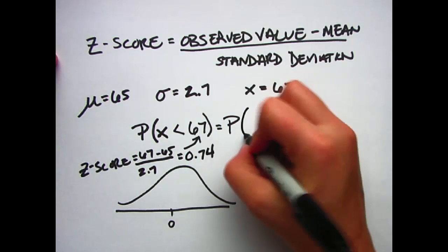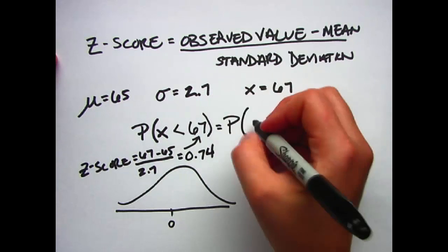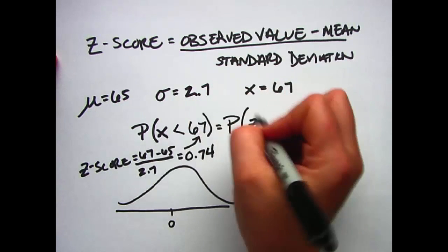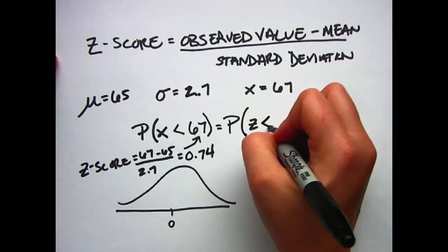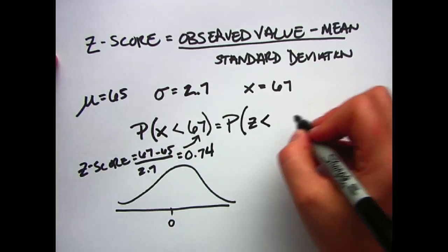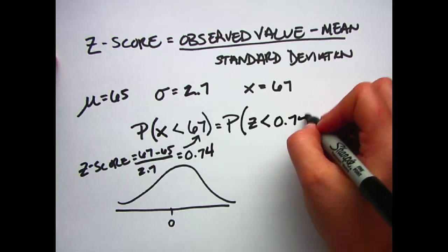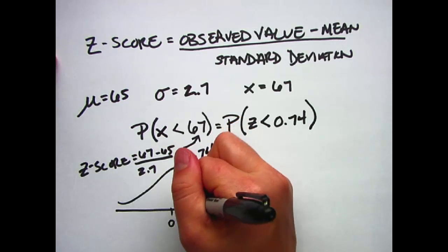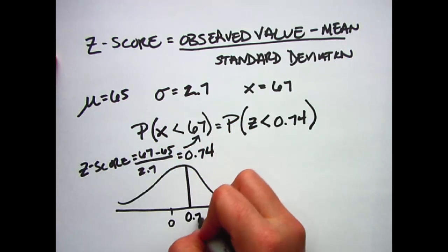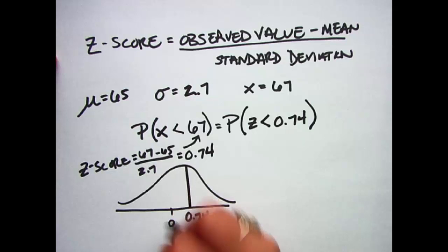Now I've just standardized, and x no longer is x, it's z, because now we've gone into the standardized value. It's still less than, but here instead of 67, I'm going to write my standardized value, which is 0.74. Because this is a number line, 0.74 would be approximately here, so it's positive, just a little to the right.